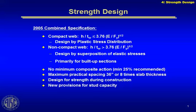Just a couple of things to highlight on this slide. You're designing composite members by the new 2005 specification, indeed the older ones as well. In order to use a plastic stress distribution approach, which is what most composite beam design is based on, you have to have a compact web, meaning the H over T requirements as shown. If you don't have a non-compact web, then you have to design by the superposition of elastic stresses, which is a little bit more complicated.